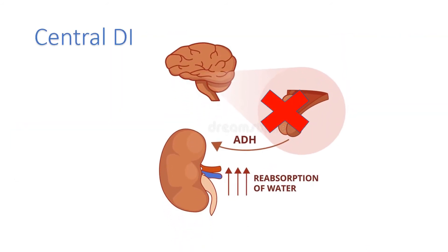With central diabetes insipidus, the problem lies in a central deficiency — the hypothalamus or pituitary is not producing enough ADH in response to increased serum osmolality. Because ADH never makes it to the kidneys, the kidneys have no signal to reabsorb water in the first place.